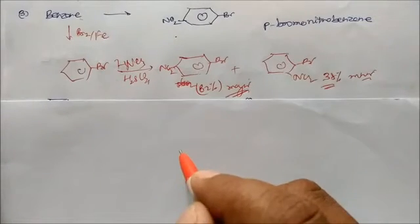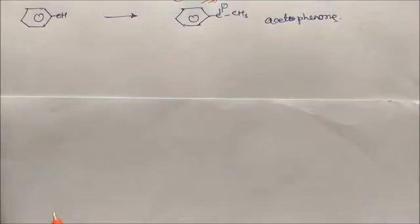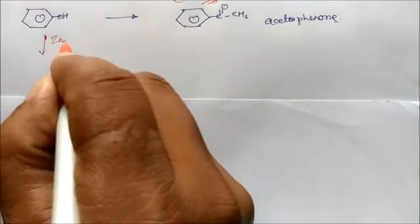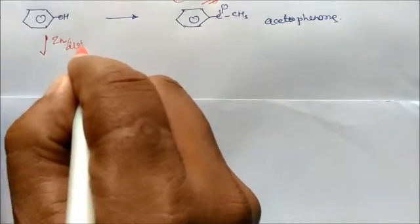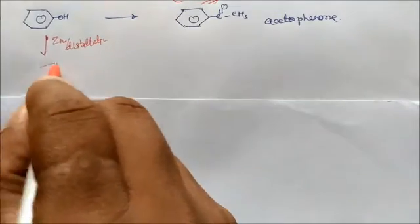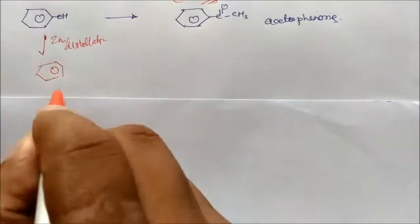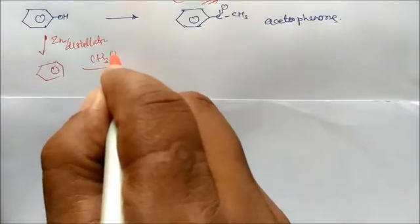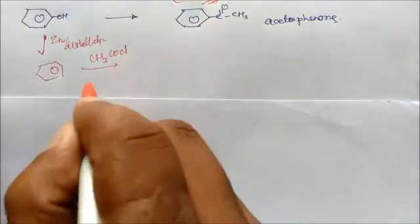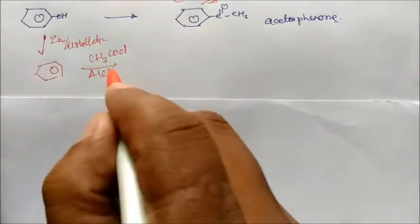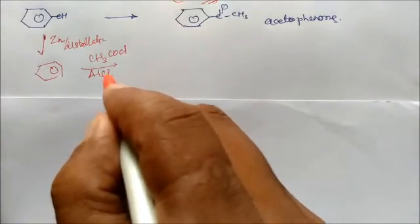Next is phenol to acetophenone. First give zinc dust and distill — zinc distillation converts phenol into benzene. Then give CH3COCl in presence of AlCl3 — this is the Friedel-Crafts acetylation reaction, giving acetophenone.